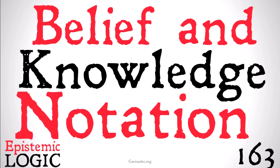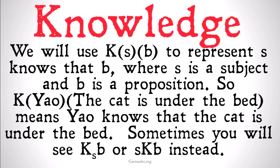We're going to use K(S, B) to represent 'S knows that B.' K is a relation between subjects S and propositions or beliefs B. So K(YOW, 'the cat is under the bed') means that YOW knows that the cat is under the bed. Sometimes you'll see this written as K subscript S, B, or just SKB instead. I like using the parentheses because it makes the scope of each element very clear, but those other notations are also completely valid.